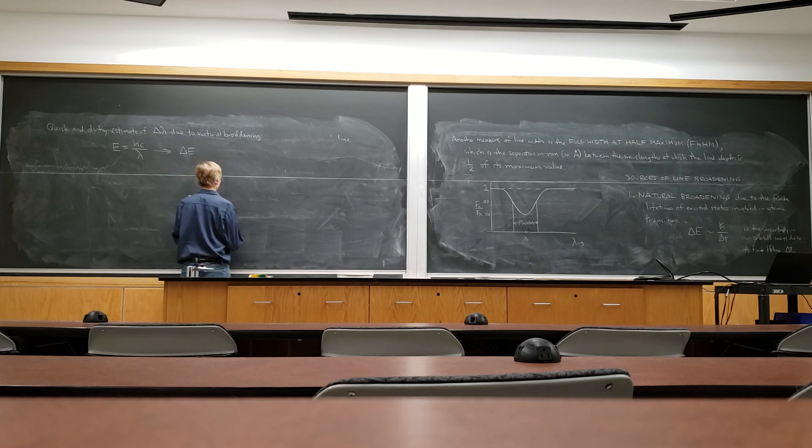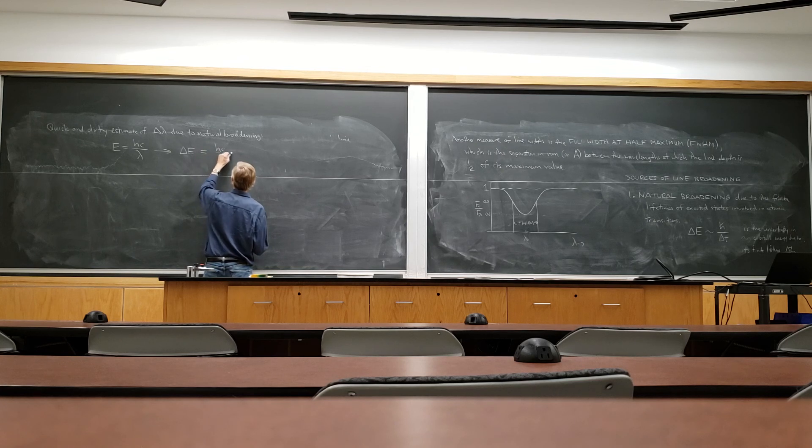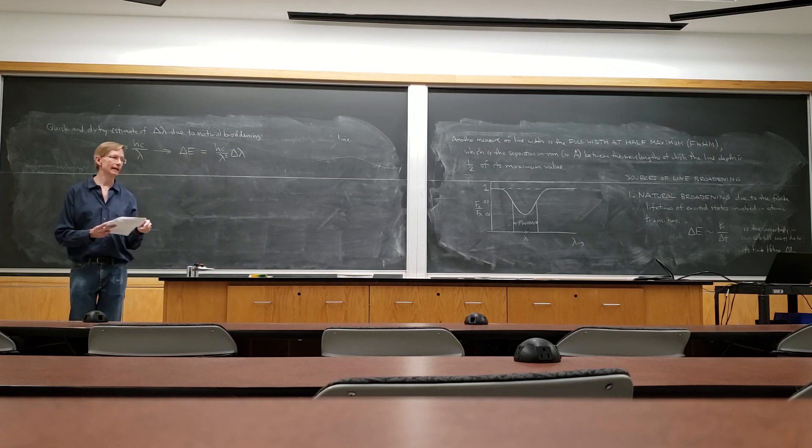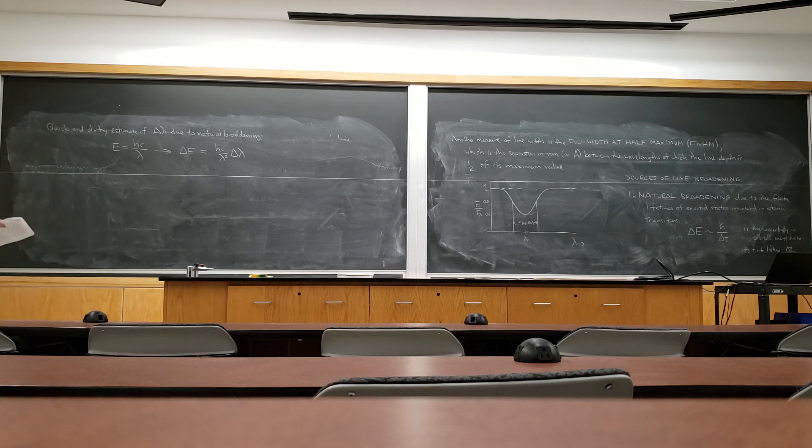So that says delta E should be hc over lambda squared delta lambda, ignoring the minus sign of differentiating 1 over lambda. The derivative of 1 over lambda is minus 1 over lambda squared. So I just differentiated both sides: dE is hc over lambda minus hc over lambda squared d lambda. And then I interpreted dE as delta E and d lambda as delta lambda.